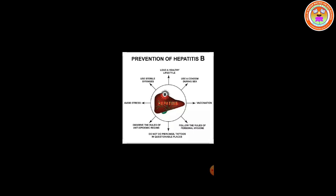Additional preventive measures include: lead a healthy lifestyle, use a condom during sex, get vaccinated, follow the rules of personal hygiene, do not do piercings or tattoos in questionable places, observe the rules of anti-epidemic regime, avoid stress, and use sterile syringes. These are all the prevention and control measures of hepatitis B.